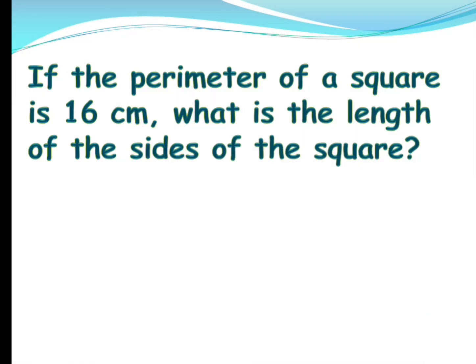Let's see another sum. If the perimeter of a square is 16 centimeters, what is the length of the sides of the square? In a square, all sides are equal. Since all sides are equal, we can simply divide 16 by the number of sides of a square, which is 4, to get the length of each side.